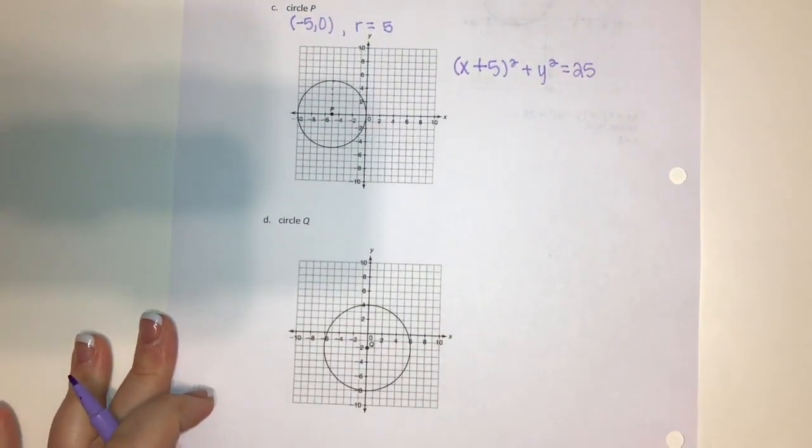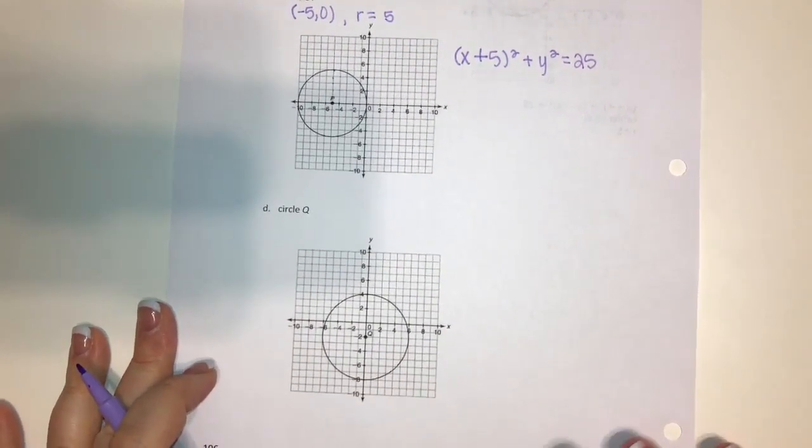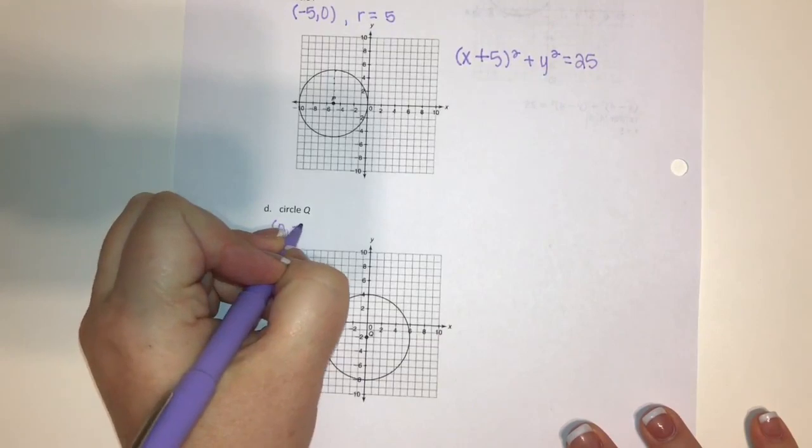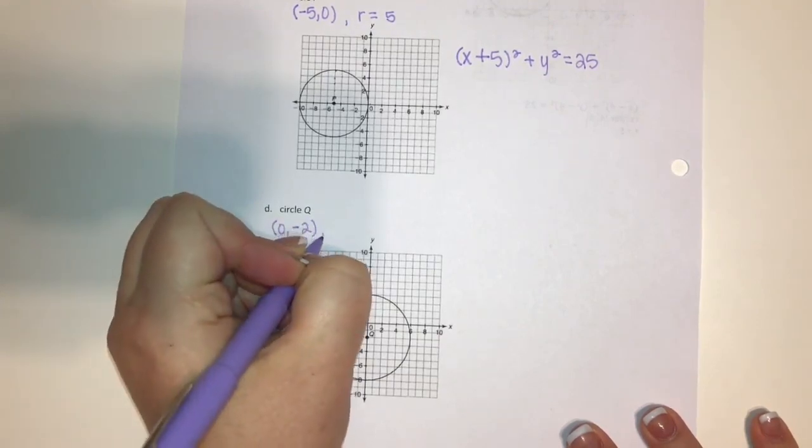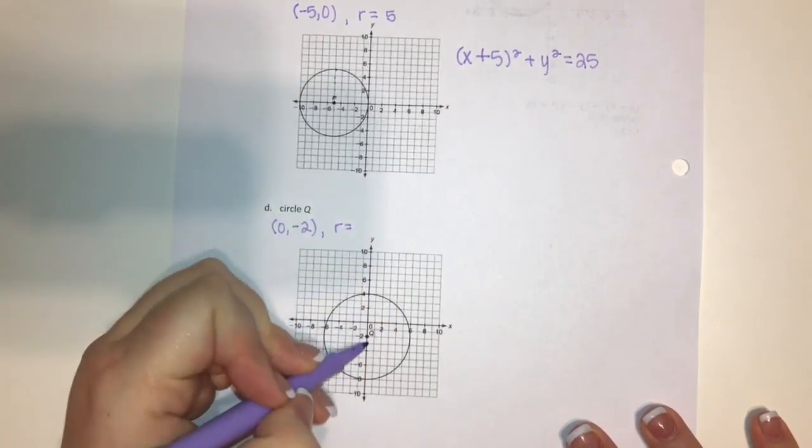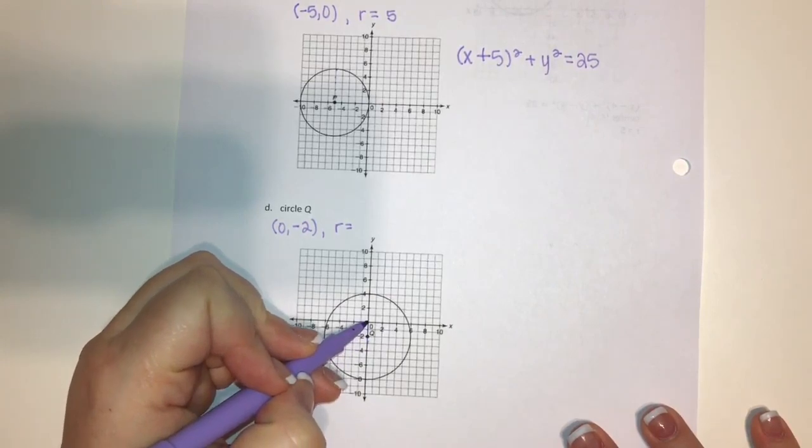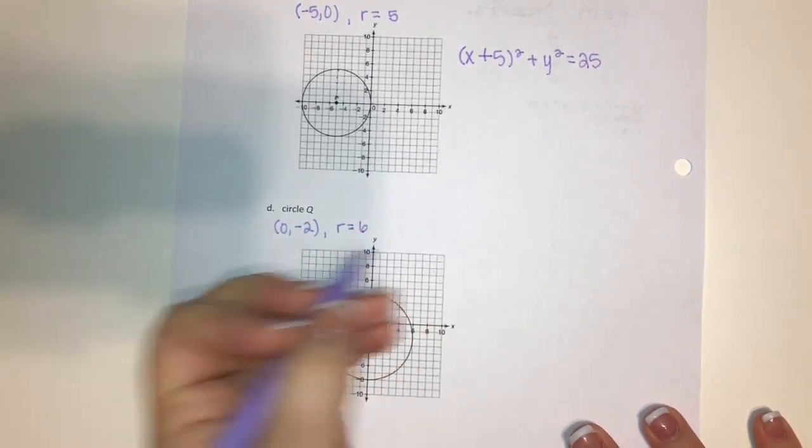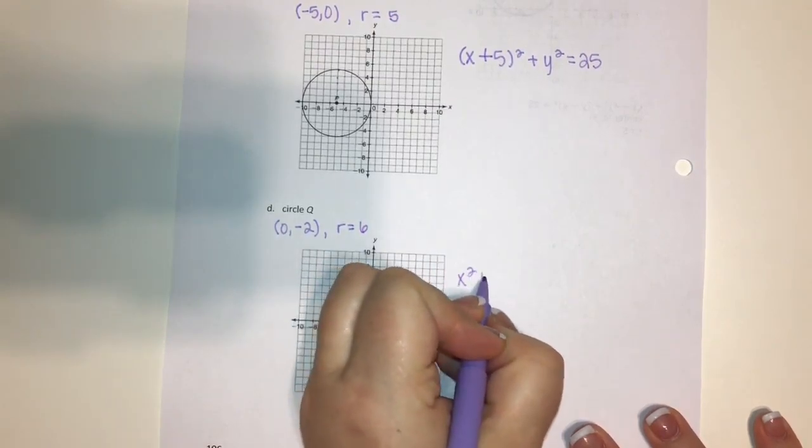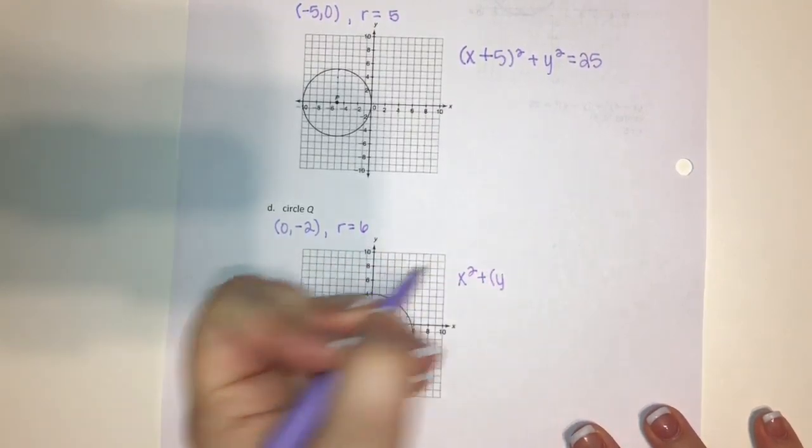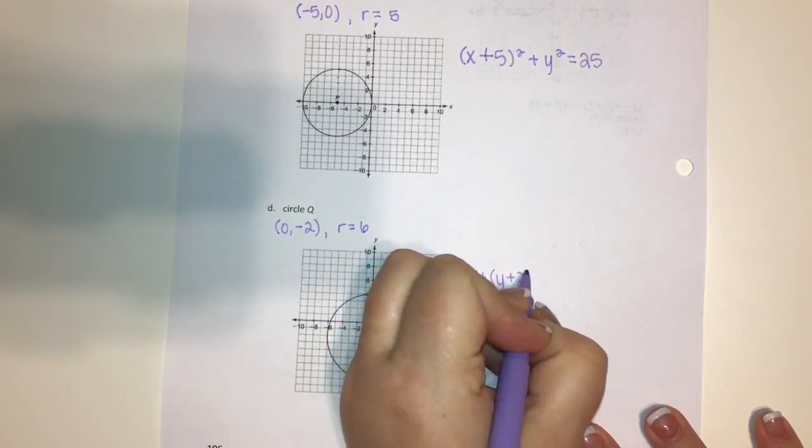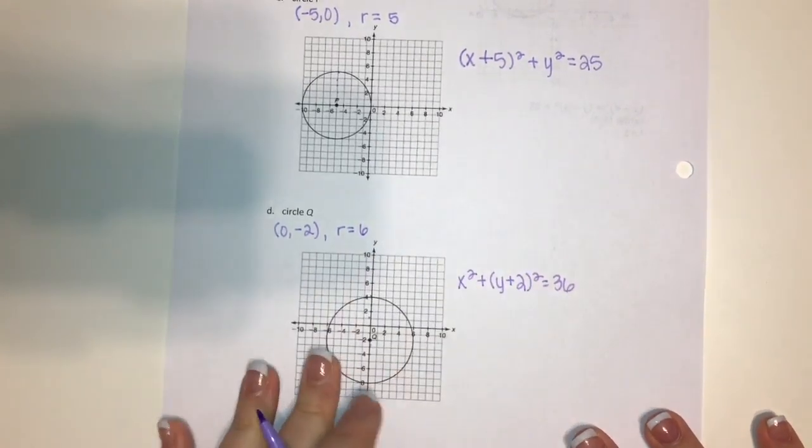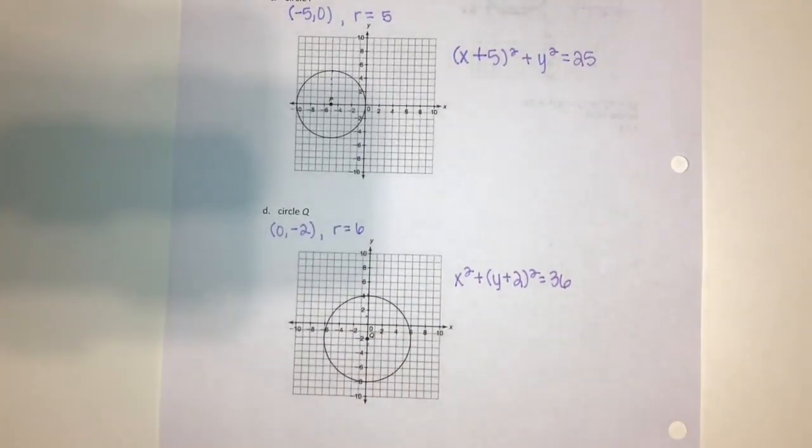On my next one, I'm going to do the same. Here it looks like my center is at (0, -2), and then I need to find my radius: one, two, three, four, five, six. Now I just plug everything in: x² + (y + 2)² = 36. And that's how we do equations of circles.